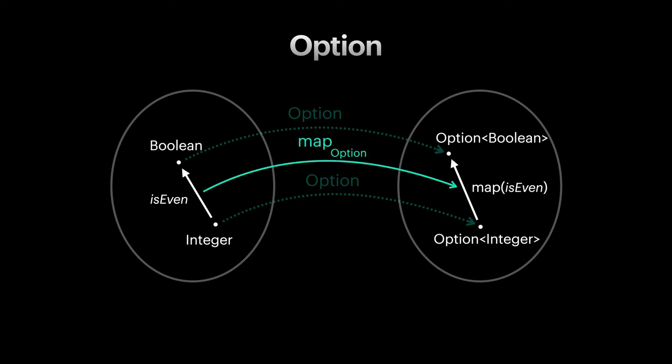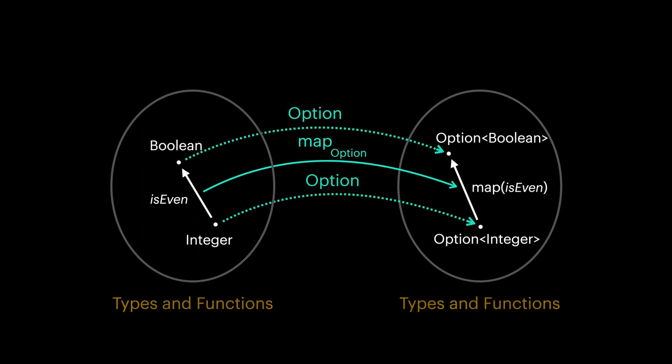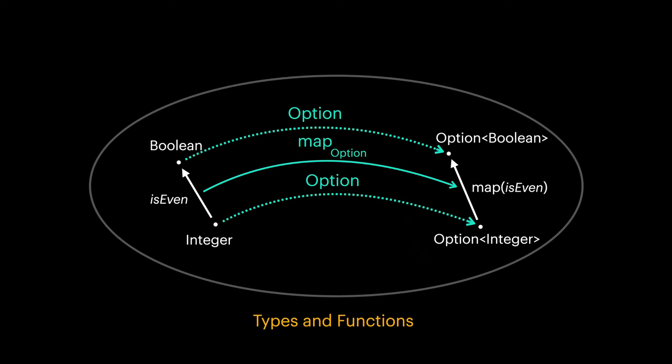Interestingly, map is a function too. As a matter of fact, both of these categories are the same and they are both category of types and functions.